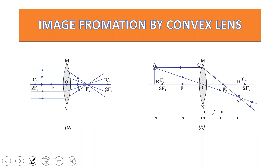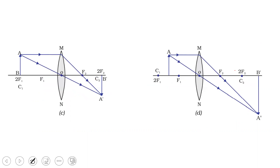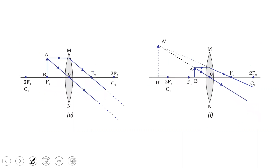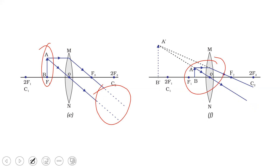Image formation by convex lens is similar to that by a concave mirror. When the object is at infinity, the image forms at F — real, inverted, highly diminished. When the object is beyond 2F1, the image forms between F2 and 2F2 — real, inverted, smaller. When the object is at 2F1, the image forms at 2F2 — real, inverted, same size. When the object is between F1 and 2F1, the image forms beyond 2F2 — real, inverted, bigger. When the object is at F, the image forms at infinity — real, inverted, highly magnified. When the object is between F and the optical center O, the image is virtual, erect, and enlarged — on the same side as the object.